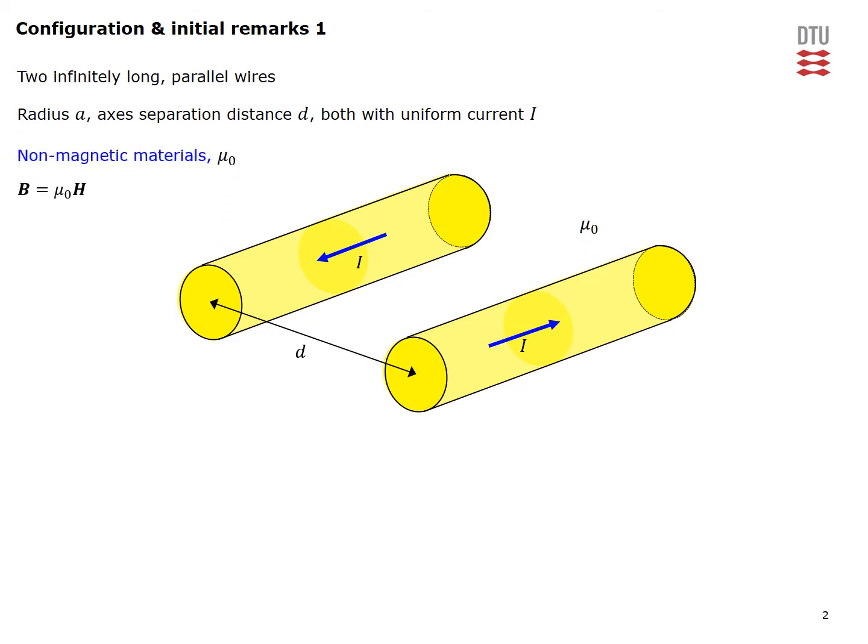All materials in question are non-magnetic with free space permeability μ₀ so that we have this simple relationship here between the magnetic flux density B and the magnetic field intensity H.